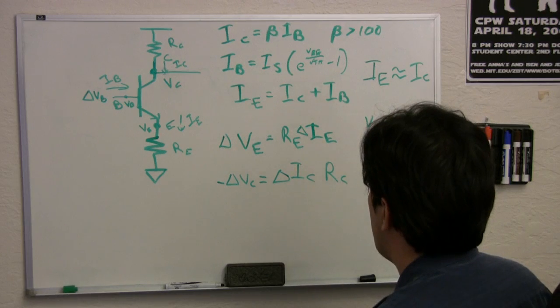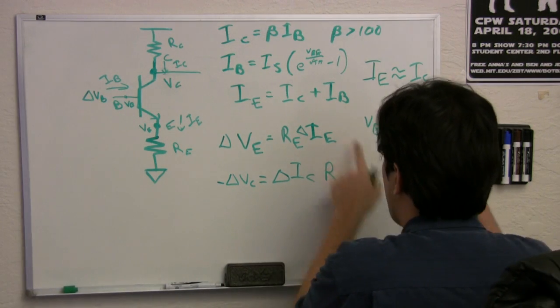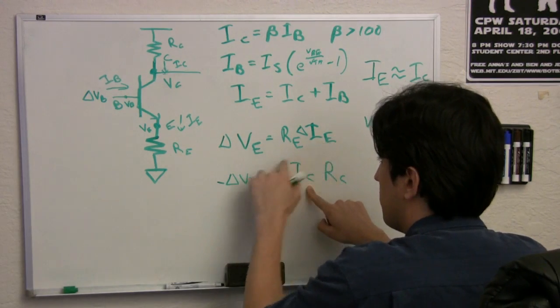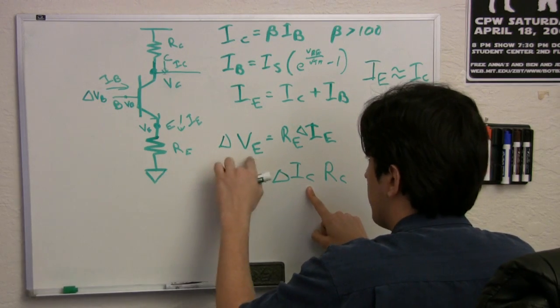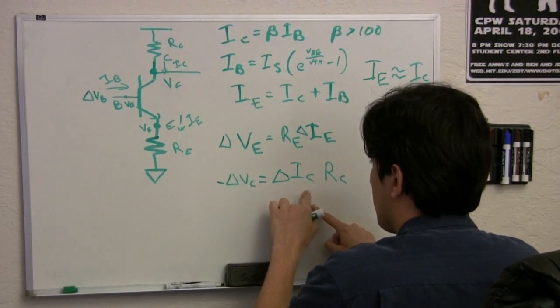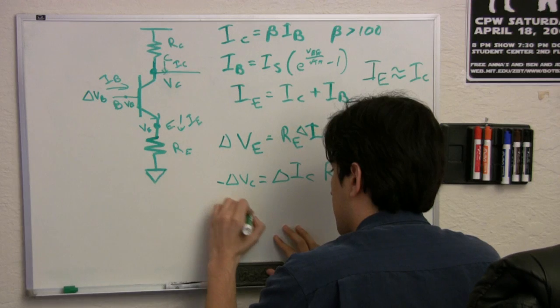Well, we know that IE is approximately the same as IC. So if I divide in this equation both sides by RE, then I get a delta VE over RE equals IE, which is the same as IC. So I'm just going to go ahead and replace that into this IC. And I get a delta VC.